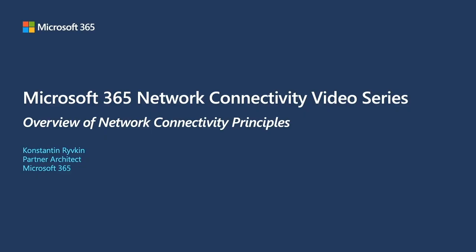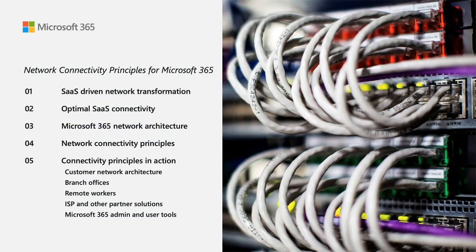Hello, I'm Konstantin Rivkin, one of the architects in the Microsoft 365 product group. I'm happy to present the Microsoft 365 network connectivity principles as part of this video series. We have a fairly packed agenda: we're going to look at some unique aspects of network connectivity for software as a service cloud such as Microsoft 365, discuss what optimal connectivity looks like, and then look deeper into the four principles Microsoft has created to help customers optimize their connectivity to the cloud.